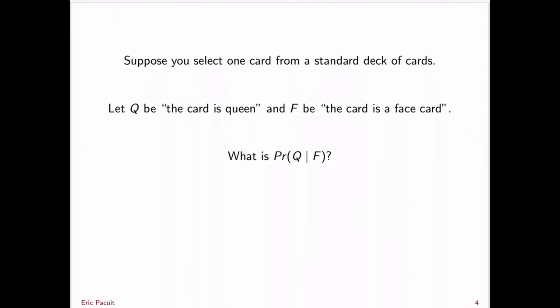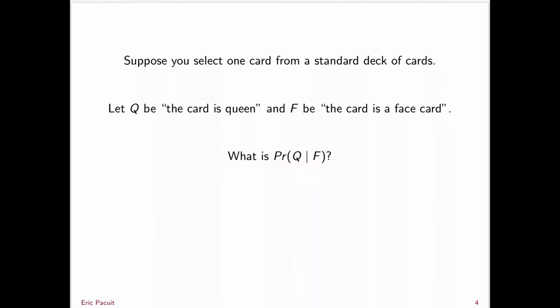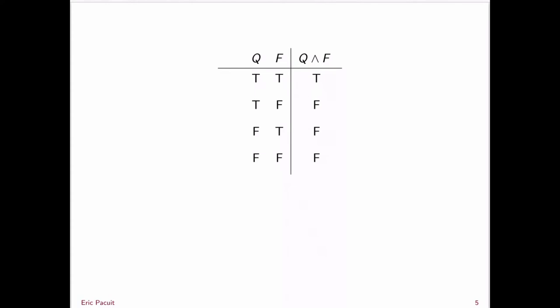Here is a more concrete example. Suppose you select one card from a standard deck of cards. Let Q be the statement 'the card is a queen,' and let F be the statement 'the card is a face card.' The question is: what is the probability of Q given F? Given that the card you drew is a face card — a jack, king, or queen — what is the probability that it is in fact a queen?